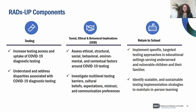The three components of RADx UP are the testing research projects, the Social, Ethical, and Behavioral Implications — or SEBI — projects, and the return-to-school funding opportunity. The testing projects seek to expand capacity to test broadly in disproportionately affected populations, understand factors contributing to COVID-19 disparities, and implement interventions to reduce these disparities. The SEBI projects are designed to inform implementation of mitigation strategies, including testing and vaccination, by understanding the ethical, historical, health care, social, and economic contextual factors associated with testing access, acceptability, and uptake.